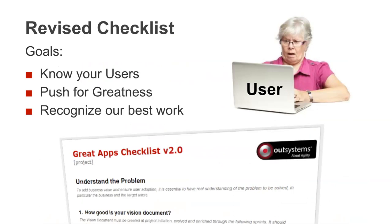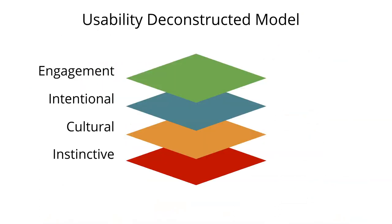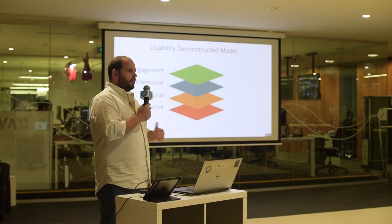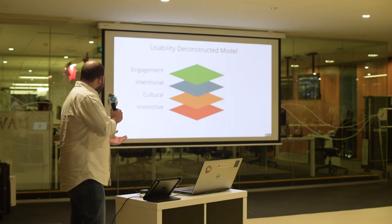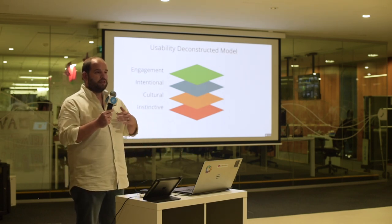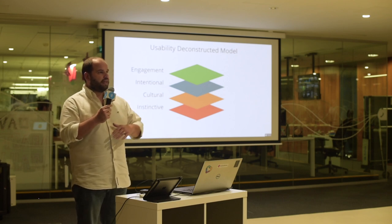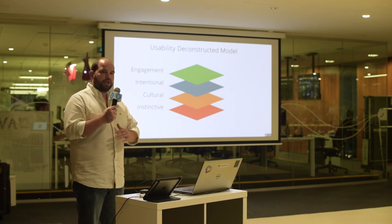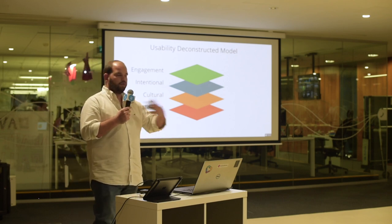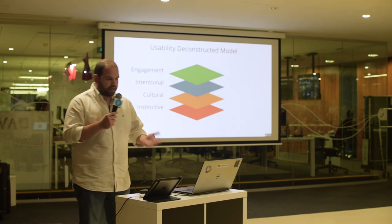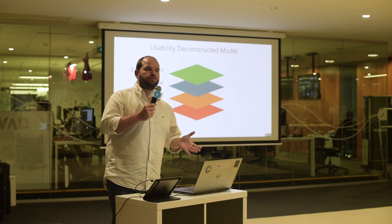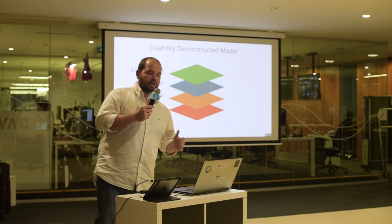This new version of the checklist to help teams do a better job was really about knowing your users. How can you build usability without knowing the user? This made me think about a set of aspects you can bring to an application that allow it to have great usability. We ended up creating a model to try to explain it. There are a few layers — not physical layers, just things you need to worry about as you add usability into your application, and they work on top of each other.